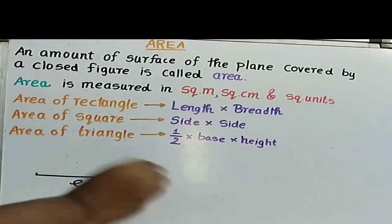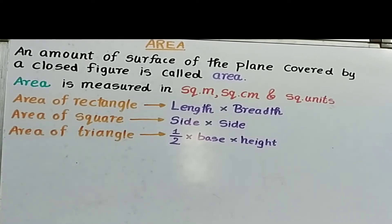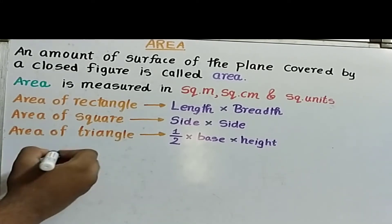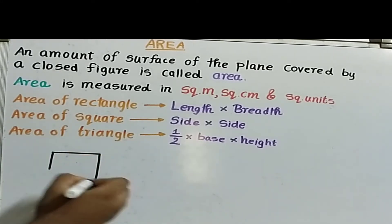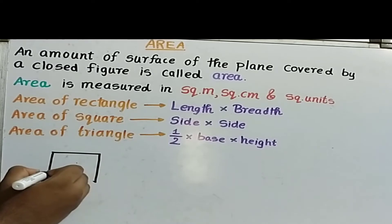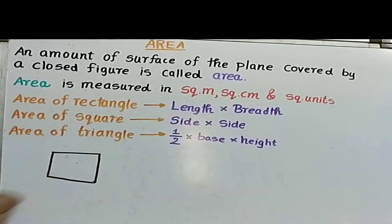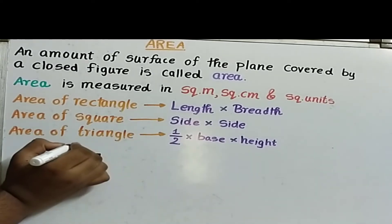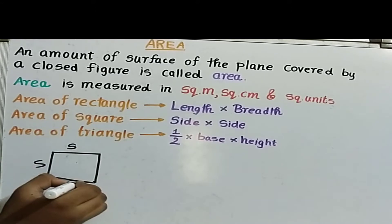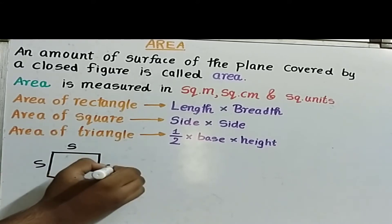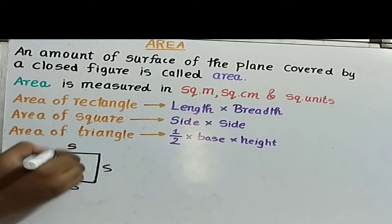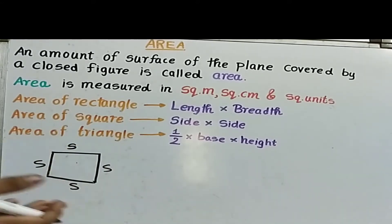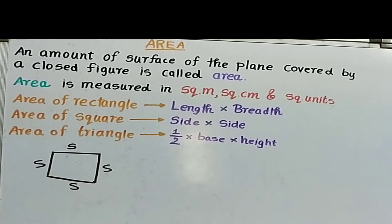Next is the area of a square. A square is just a special case of a rectangle where all sides are equal. This is also the multiplication of length and breadth, but since the length and breadth are equal, we write side × side, which is the area of a square.